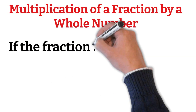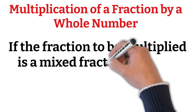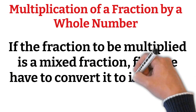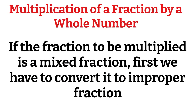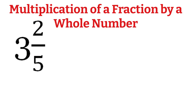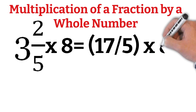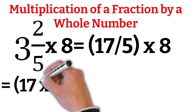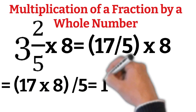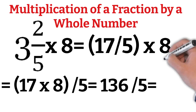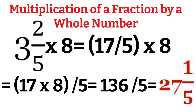If the fraction to be multiplied is a mixed fraction, first we have to convert it to an improper fraction. For example, 3 and 2/5 × 8 = 17/5 × 8 = (17 × 8)/5 = 136/5 = 27 and 1/5.